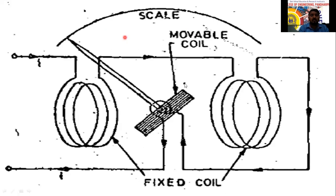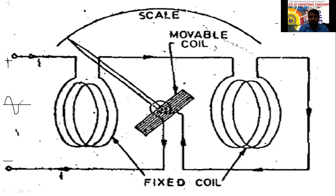This is the working principle of the dynamometer. For DC supply, only plus and minus terminals exist. This instrument is used for both AC and DC — both AC and DC can be measured.